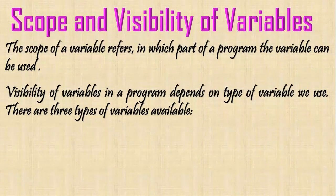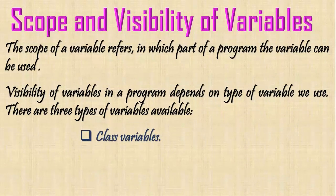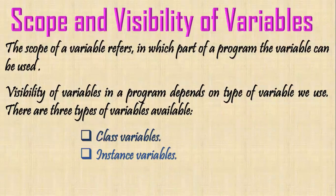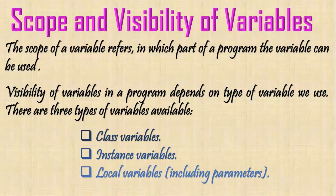There are three types of variables available: class variables, instance variables, and local variables — including parameters.